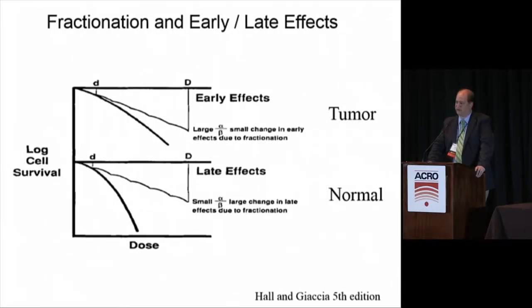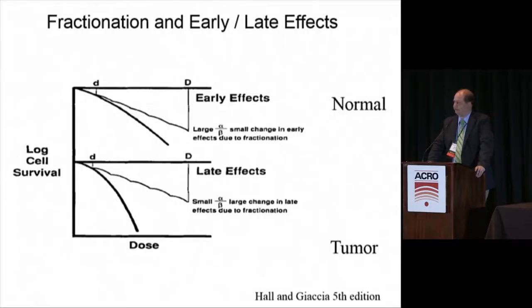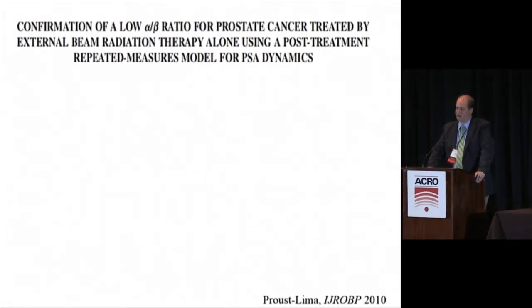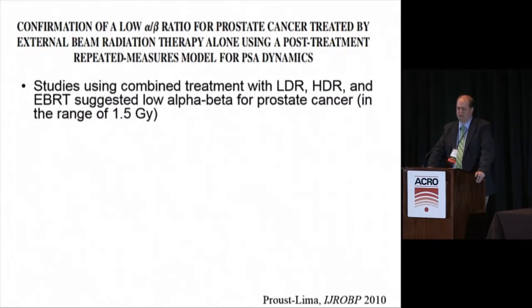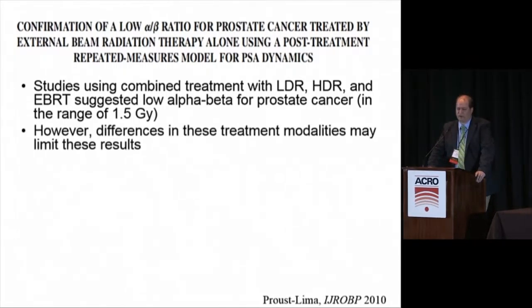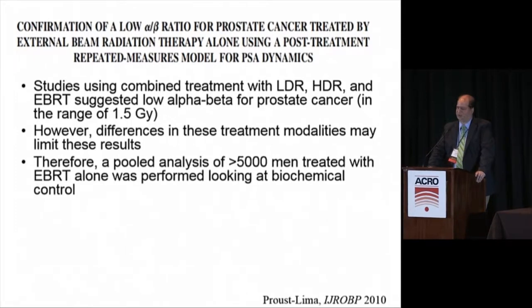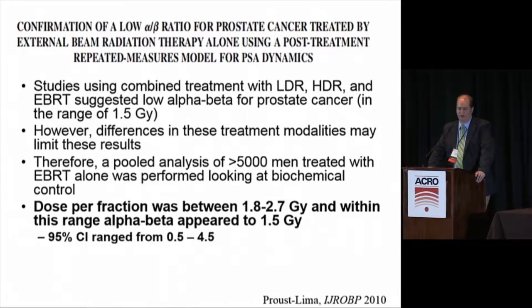Why do we fractionate? Going back to Hall, we fractionate because tumors are assumed to behave like early responding tissues, where fractionation does not cause a substantial detriment compared to single fractions, whereas normal tissues are assumed to behave like late reacting tissues, where fractionation gains a therapeutic advantage. But what if we have this backwards? In that case, fractionation might actually be the wrong thing to do.